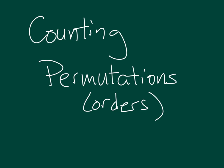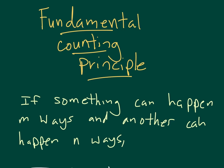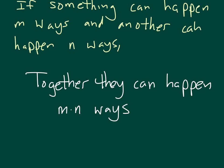In this video, we're going to introduce the idea of counting, but not just counting the way you did in elementary school, but counting the different ways that groups of things can happen together. In this section, we're counting permutations, which means we're counting the number of orders that we can put things into. We start with something called the fundamental counting principle, and it says that if something can happen M ways and another thing can happen N ways, then together they can happen M times N ways. We'll look at an example to see what this means.